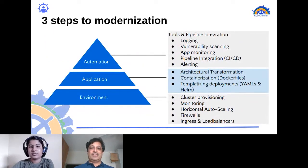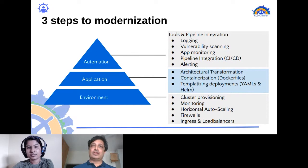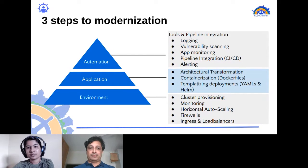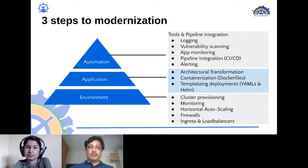Let's talk about modernization — what does it take to modernize? When we say modernization, we imply moving to a Kubernetes cluster-like platform. There are three distinct stages: the environment on which it all happens, the applications that need to run on it, and the automation involved in all these things.